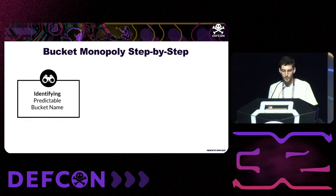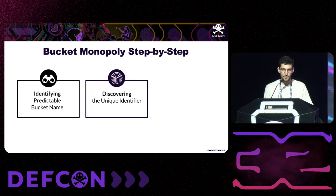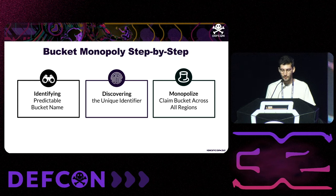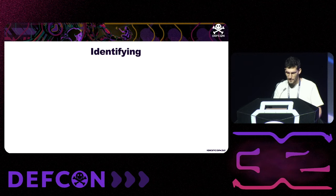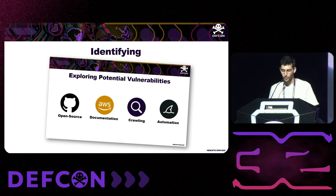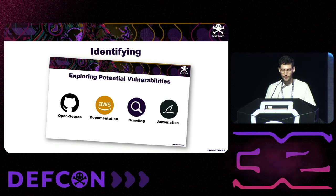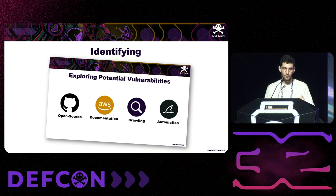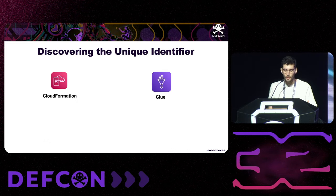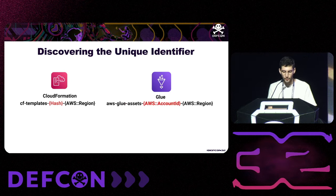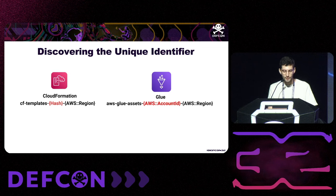Here is how to perform a Bucket Monopoly attack step by step. First, identify predictable bucket names and verify the associated services are indeed vulnerable. Second, recognize the unique identifier in the bucket name — it might be a random hash requiring further investigation, or the account ID or other public metadata. For the reconnaissance step we use GitHub regex search, AWS documentation, and tools like TrailShark to crawl AWS services.